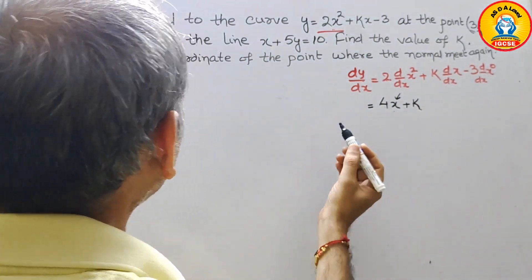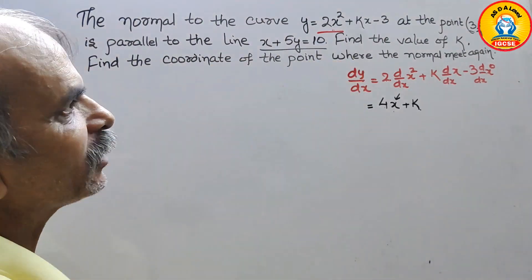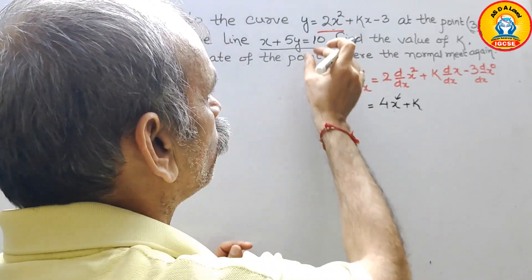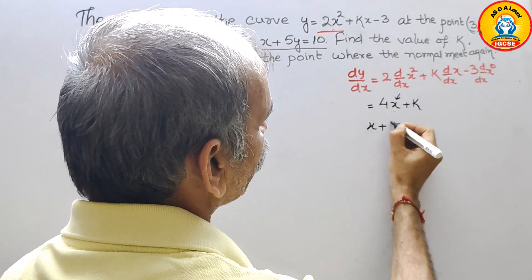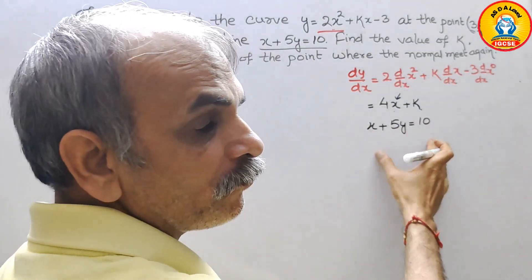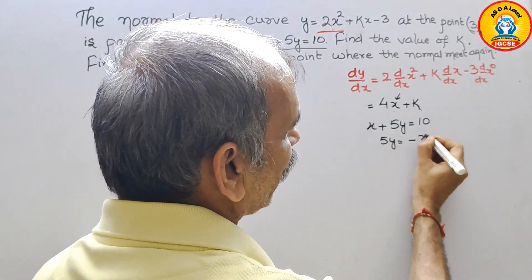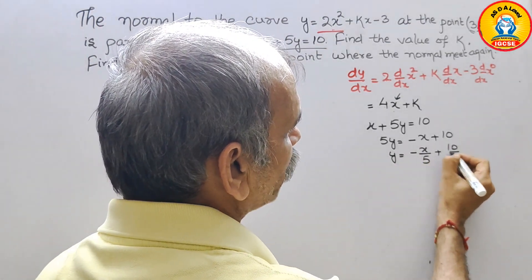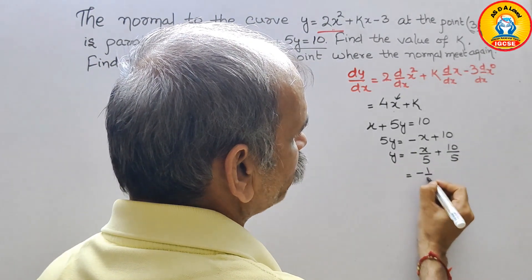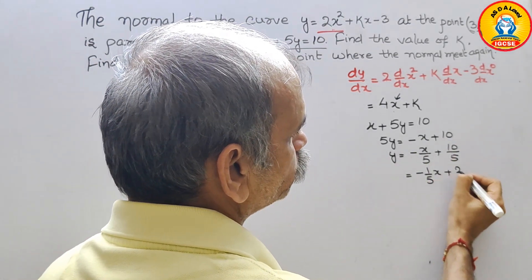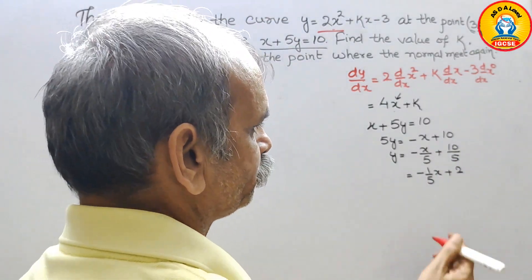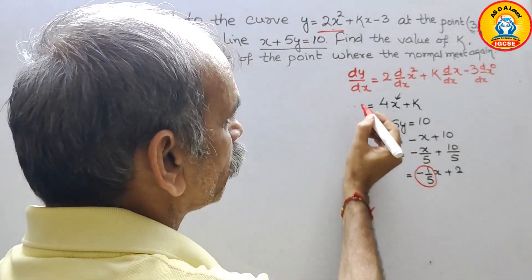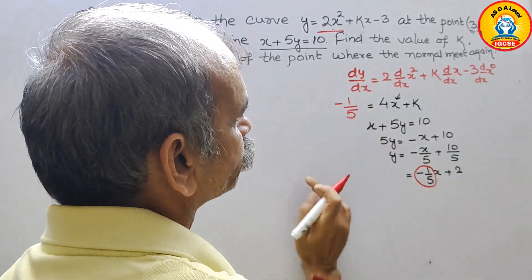They have told the normal is parallel to the line x + 5y = 10. If two lines are parallel, their gradients are equal. So rearranging: 5y = -x + 10, giving y = -x/5 + 2. Therefore the gradient of this line is -1/5.